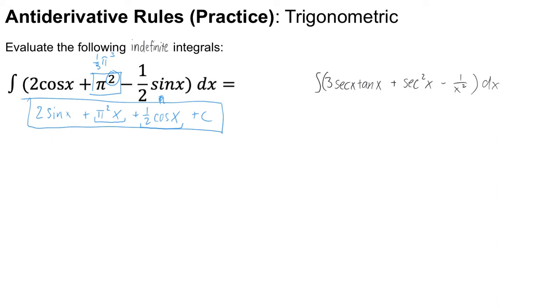All right, next problem: the antiderivative of three secant x tangent x plus secant squared x minus one half, one over x squared dx. Before I do the problem what I'll do is rewrite this because the part after the trig I got a one over x squared, I want to make that actually just x to the negative two power dx.